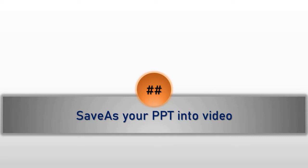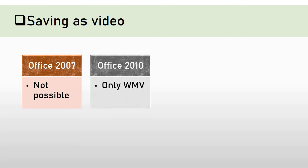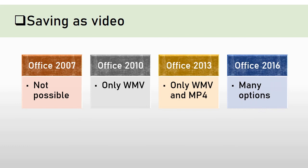To save PowerPoint slides as video, you require specific Office versions. It is not possible in Office 2007. Office 2010 supports only Windows Media Video (.wmv). Office 2013 supports both WMV and MP4. Office 2016 and Office 2019 provide many more extension options and also offer additional actions available during narration recording.